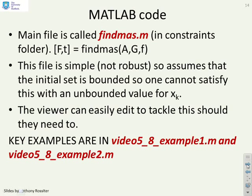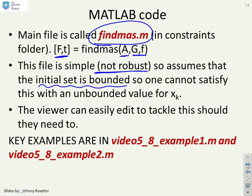The code that you need is in this file findmas.m, and you can see it's got a very simple notation. You find the F matrix, the T vector, by substituting the transition matrix A, and the constraint definition at each sample. But we emphasise here this file is not robust in that it assumes the initial set is bounded. So you cannot satisfy this with an unbounded value for xk.